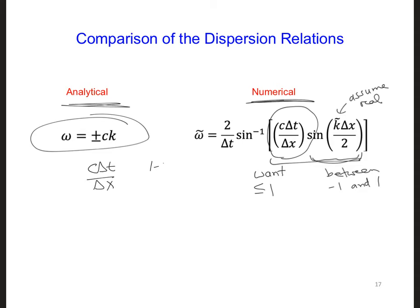So for example, if we set c delta t over delta x equal to S, and then we make sure S is equal to a number less than or equal to 1.